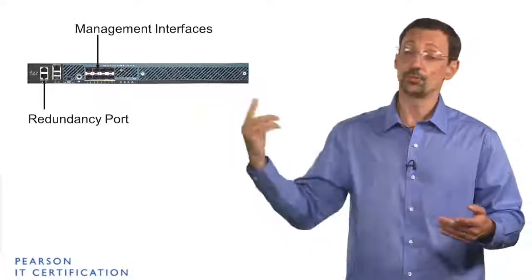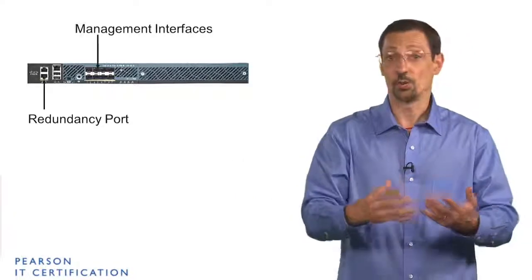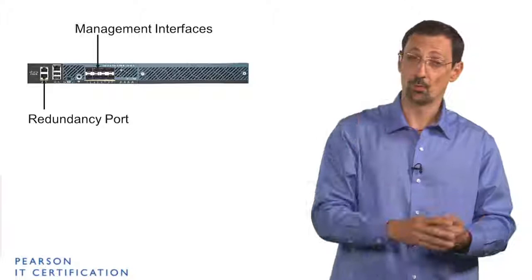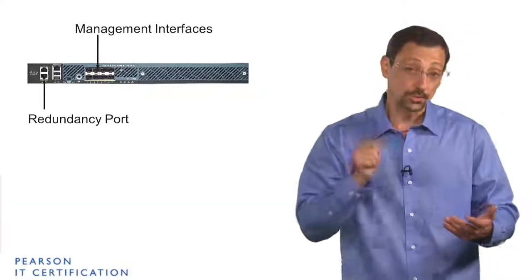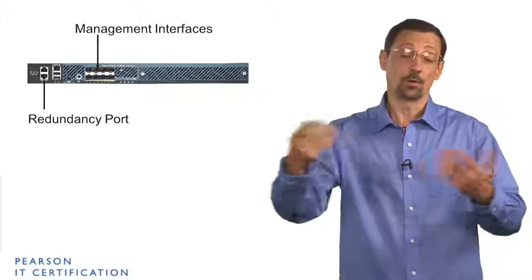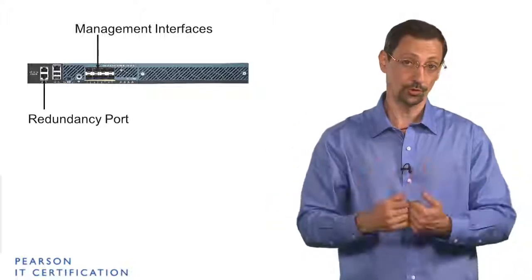And then all the interfaces that you see in the middle, those are going to be the connection to your network. Those are one gig interfaces on the 5508 as an M state 8. You have eight of these interfaces. You can connect one, several, or all of them to your network.